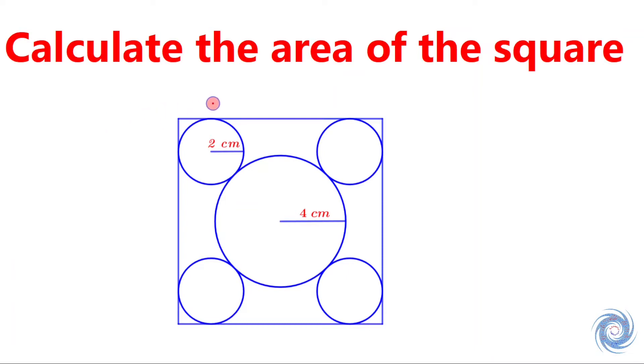Let us take the vertices of the square as A, B, C, D. Now, let us draw the diagonal AC. Let E be the center of this circle, F be the center of this one, and G be the center of this circle.